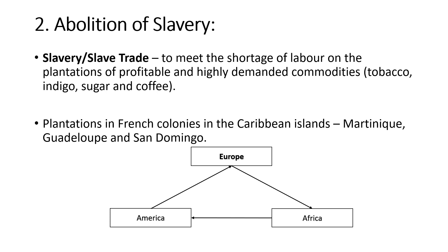Now, abolition of slavery. Slavery or slave trade was started in the 17th century in France. The main reason for introducing slavery was a shortage of labor in the plantations of profitable and highly demanded commodities like tobacco, indigo, sugar and coffee. These plantations were mostly done in the French colonies in the Caribbean islands — some of them being Martinique, Guadeloupe and Saint-Domingue — all under the overseas administration of France.